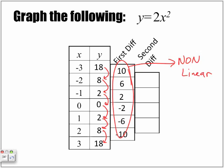But now let's look at the second difference. From 10 to 6, 4. 6 to 2, 4. 2 to negative 2, 4. Negative 2 to negative 6, 4. Negative 6 to negative 10, also 4. So because the second differences are all the same, therefore, the following example is quadratic.